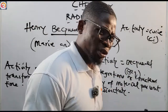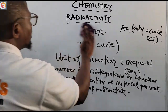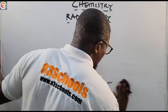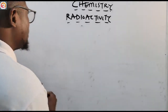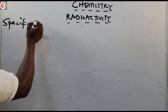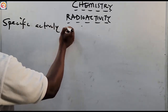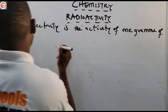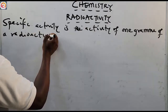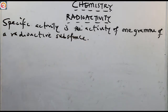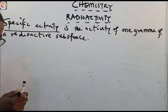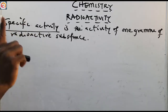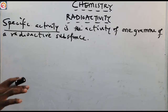Now, specific activity: specific activity is the activity of one gram of a radioactive substance. So specific activity is the activity of one gram of a radioactive substance. That means specific activity is activity per unit gram — it is as simple as that.